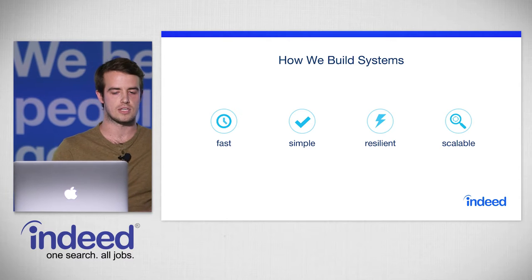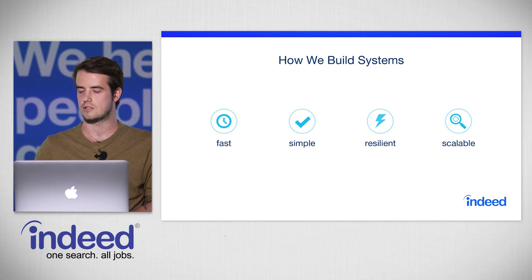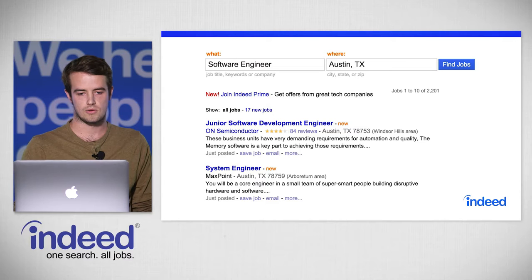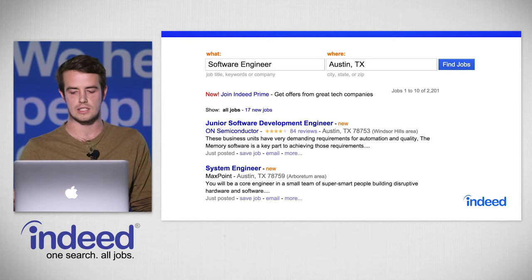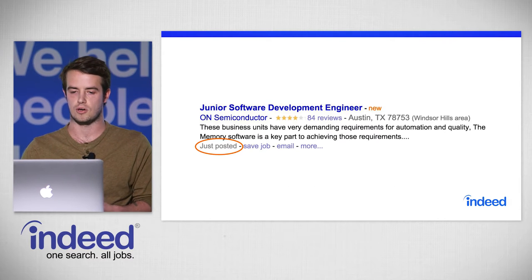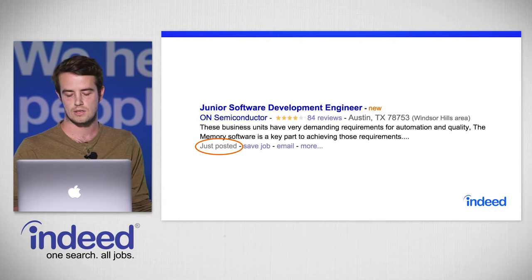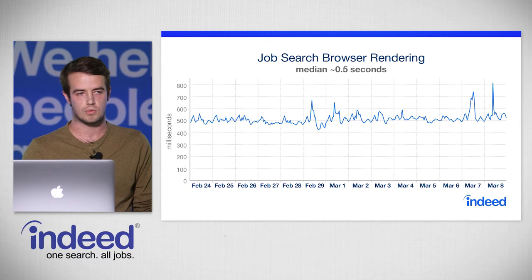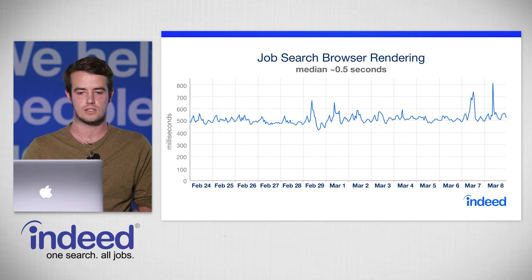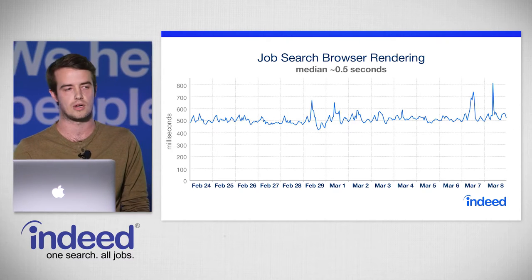In general at Indeed, we build systems that are fast, simple, resilient, and scalable. When a job seeker looks for a job on Indeed, we want to show them the most recently posted jobs on the web — as soon as a job is available on the web, we want it on Indeed. We want that page to render as quickly as possible. Today, it takes about half a second for that search engine results page to render in the browser.